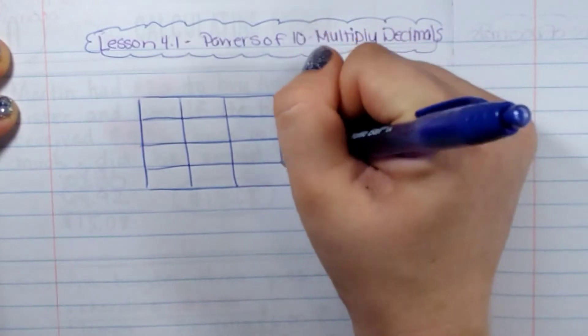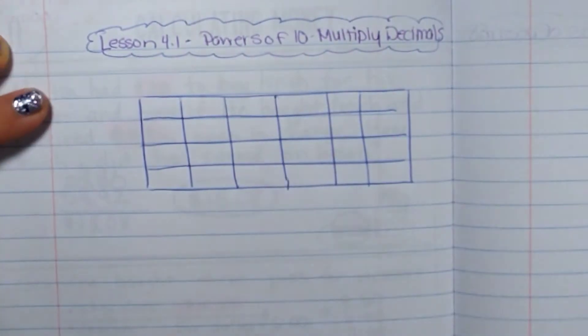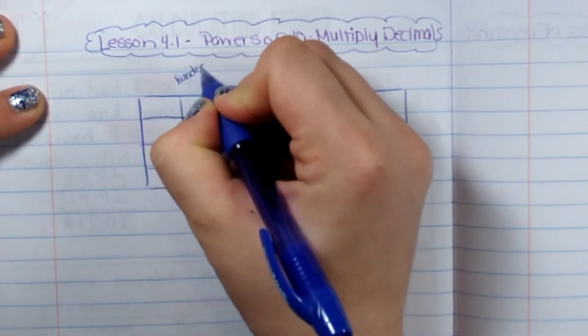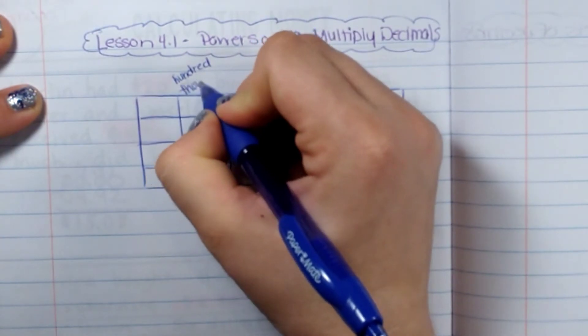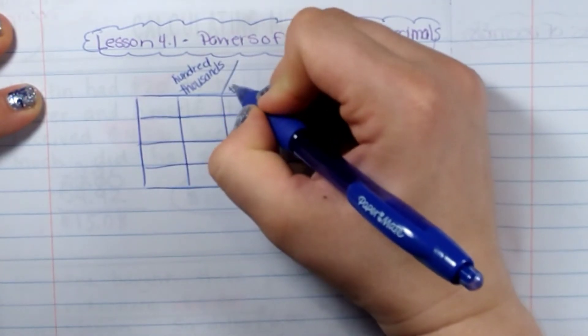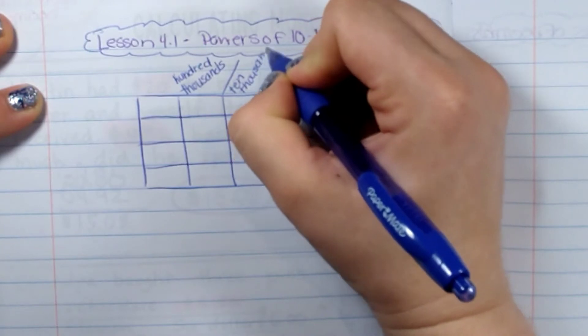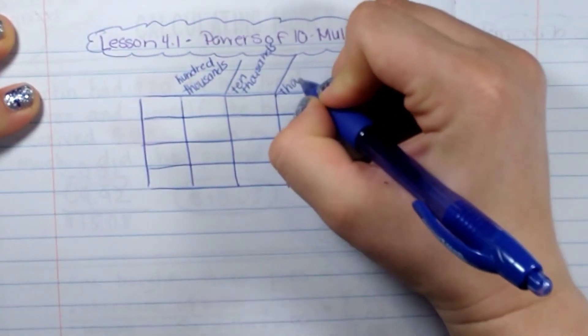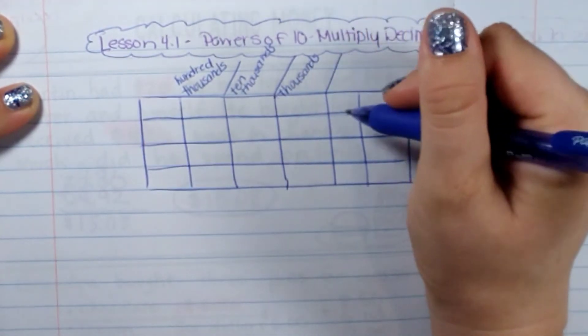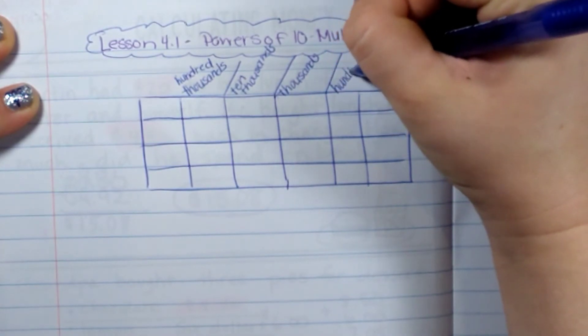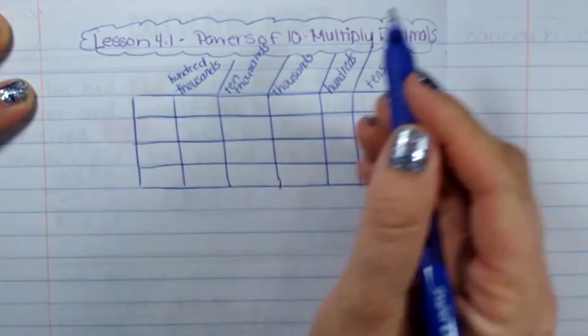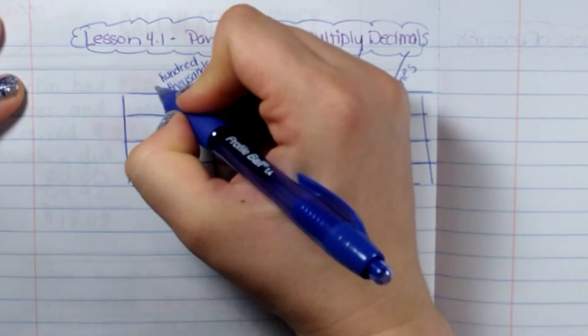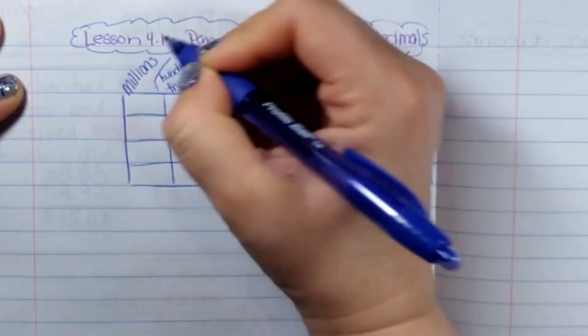It's going to have four rows. One, two, three, five. Okay. And here are the titles. We have hundred thousands, ten thousands, thousands, hundreds, tens. I should have started over here. And then we have the ones. So I'm actually going to add here. And we'll put this here. This is millions. So it actually has seven columns.